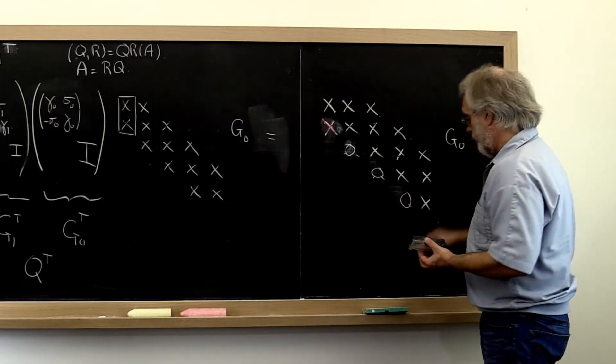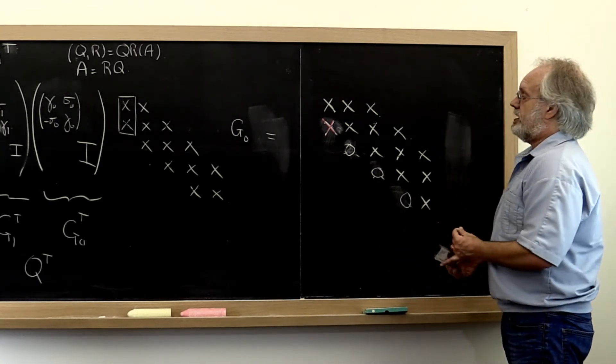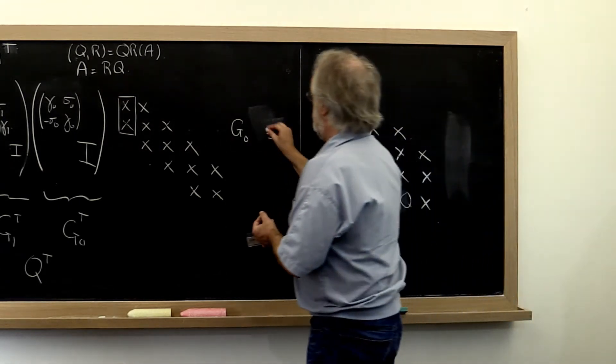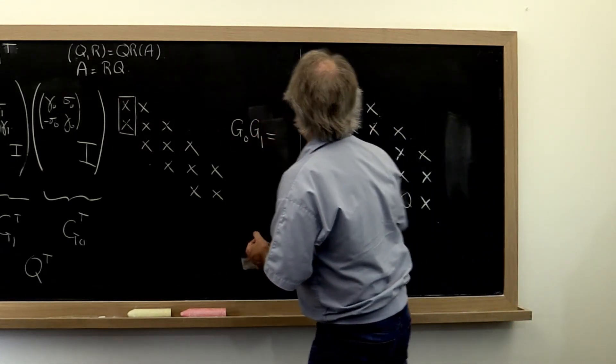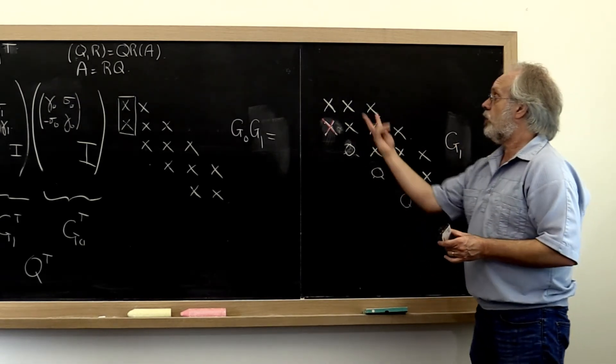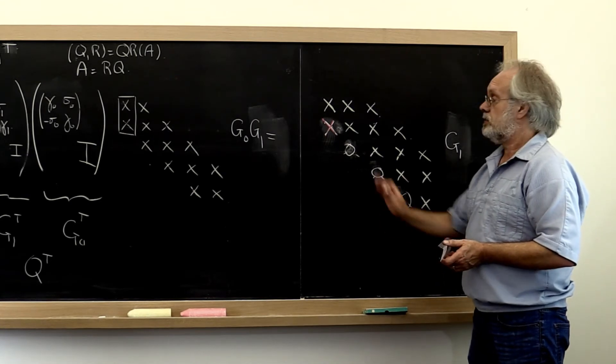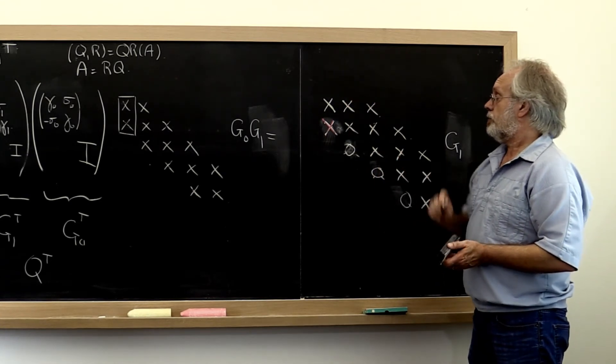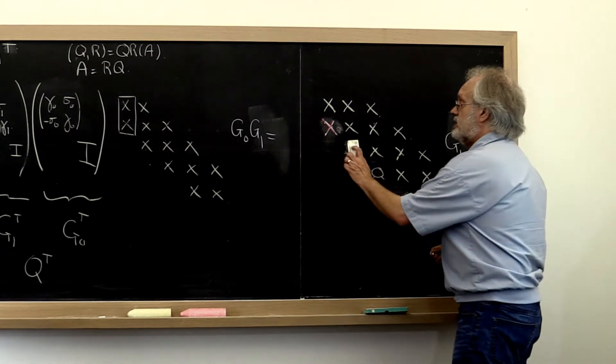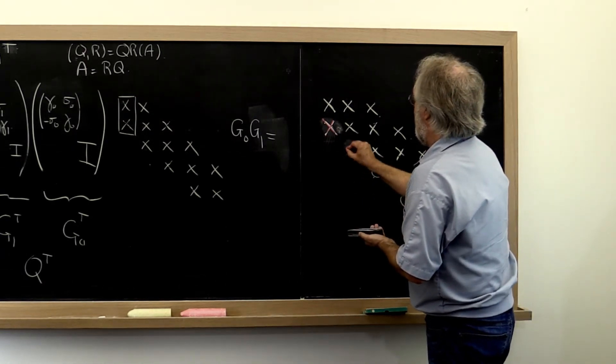Then, now we have applied G0 to this, so we can take that away. Then we apply G1 from the right, which means we have to apply G1 from the right to this matrix. Notice that that only affects the second pair of columns, the second column and the third column. And what that means is that we end up introducing a nonzero right there.